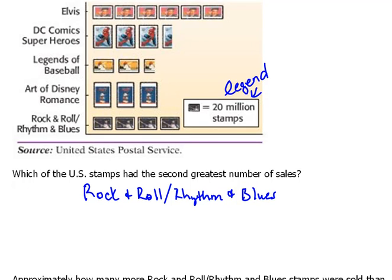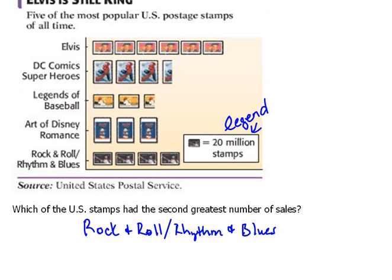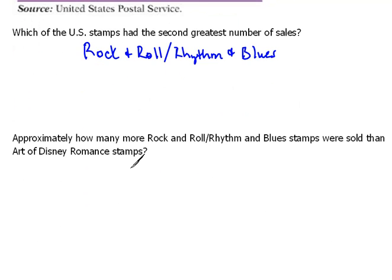The second question asks: approximately how many more Rock and Roll and Rhythm and Blues stamps were sold than Art of Disney Romance stamps? Looking at the pictograph, Rock and Roll has four icons worth 20 million each, and Disney has three icons worth 20 million each. That's one icon difference, so there were 20 million more Rock and Roll and Rhythm and Blues stamps sold than Disney stamps.